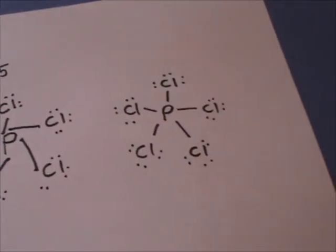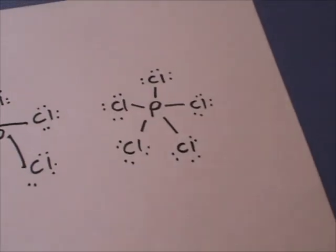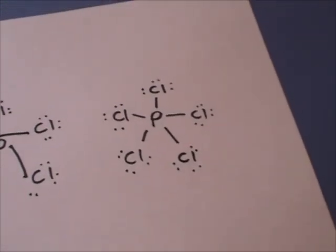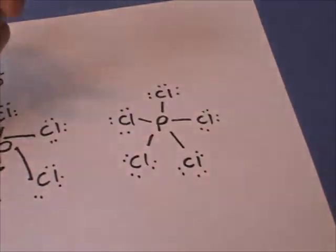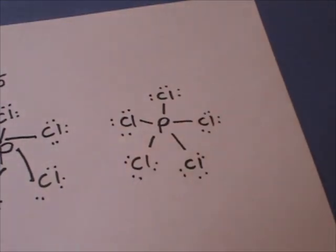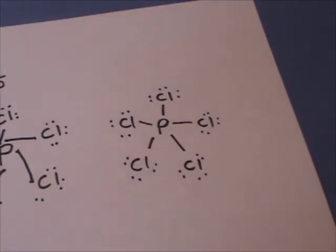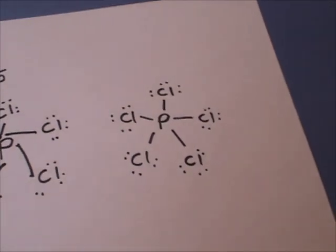And so now all of the chlorines have their complete octet, eight valence electrons. So each one of those chlorine atoms are happy, as we say, or they're stable that they have that isoelectronic to the noble gas configuration of eight valence electrons.